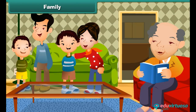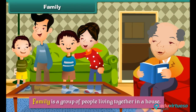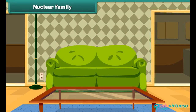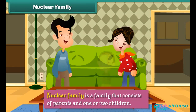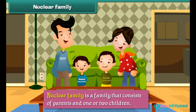Family: Family is a group of people living together in a house. The group consists of parents and their children. Nuclear family: A nuclear family is a family that consists of parents and one or two children. This type of family is also called the small family.